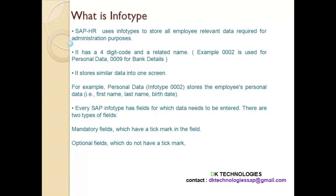SAP HR uses info types to store all employee-relevant data required for administration purposes. The purpose of the info type is to store employee information. An info type is a four-digit code. Each info type is used for its own purpose. Info types store similar data into one screen, meaning personal details cannot be stored in the bank details info type, and bank details cannot be stored in any other info type. Each info type has its own purpose.